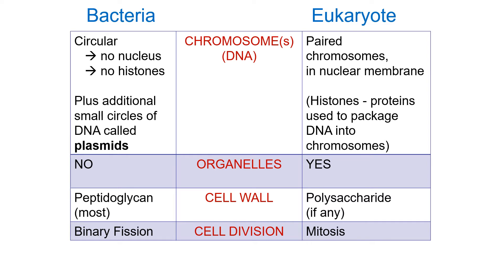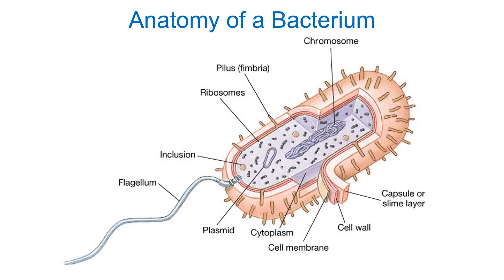In bacteria we don't have organelles, whereas in eukaryotes we have the Golgi, rough and smooth ER, etc. In bacteria, if there is a cell wall, it's made of peptidoglycan. In eukaryotes, if there is a cell wall, it's made of polysaccharide. Animals don't have a cell wall at all — they have an extracellular matrix made of protein. Cell division in bacteria can be very quick, in some cases less than 20 minutes, performed by binary fission.